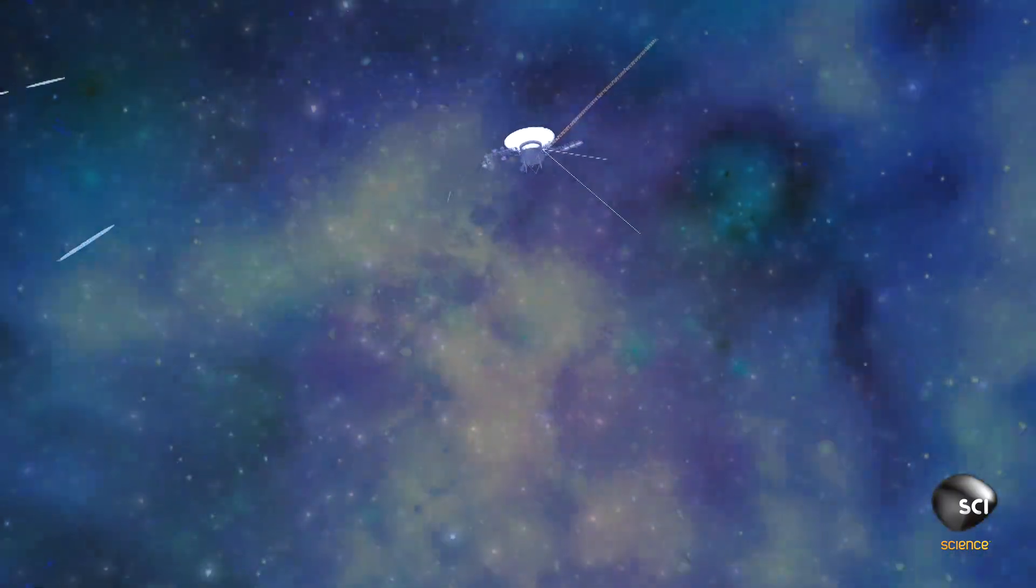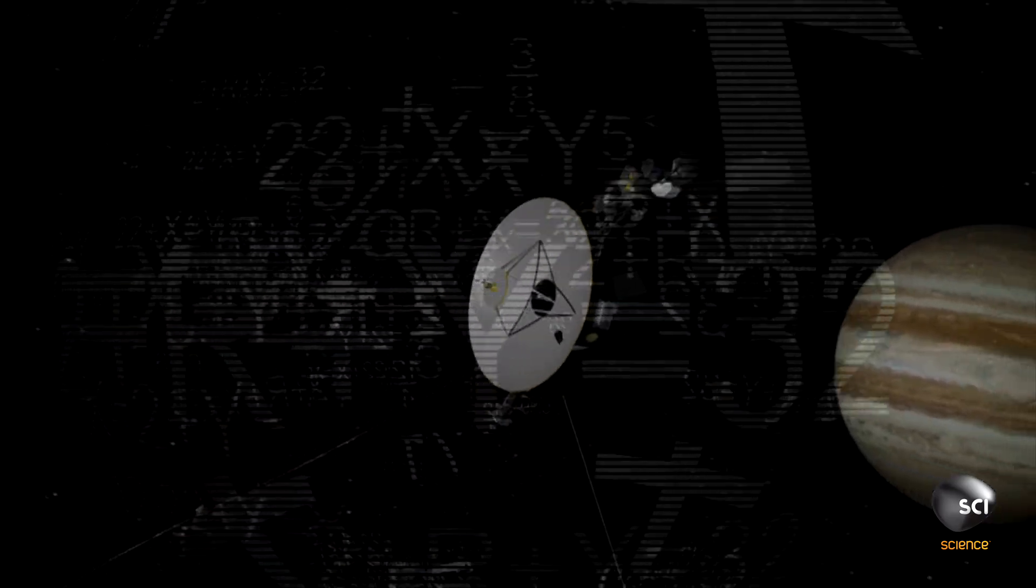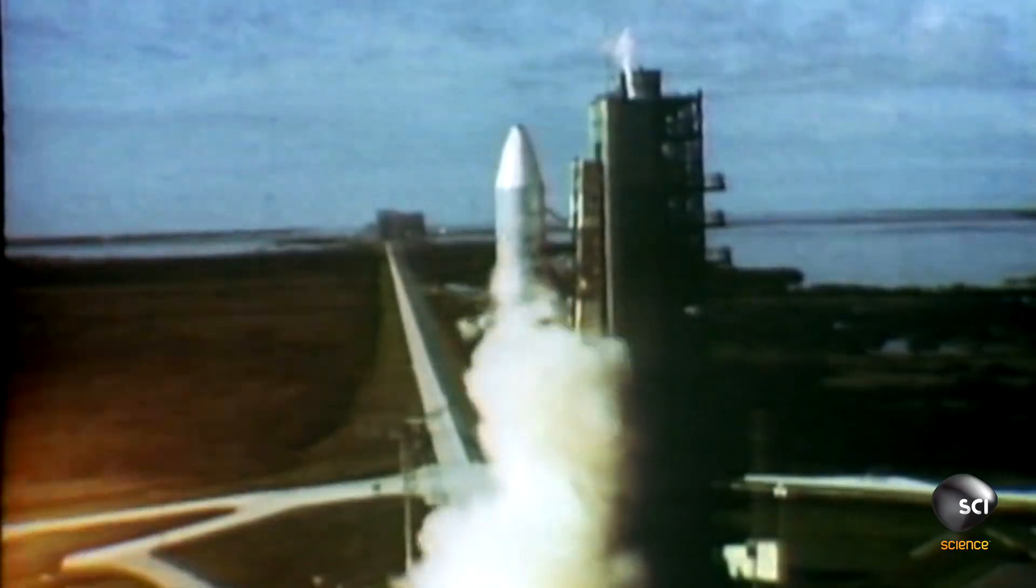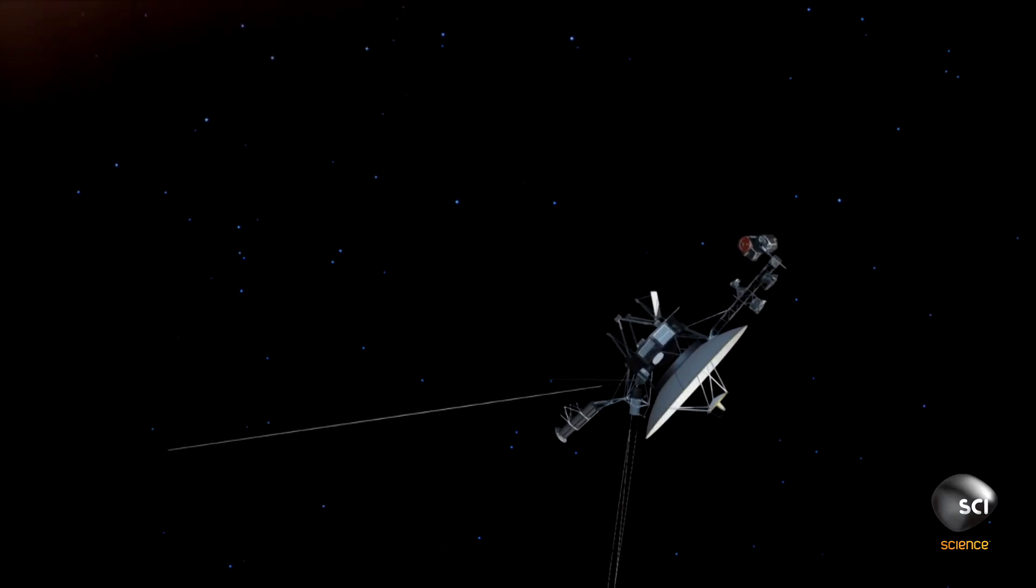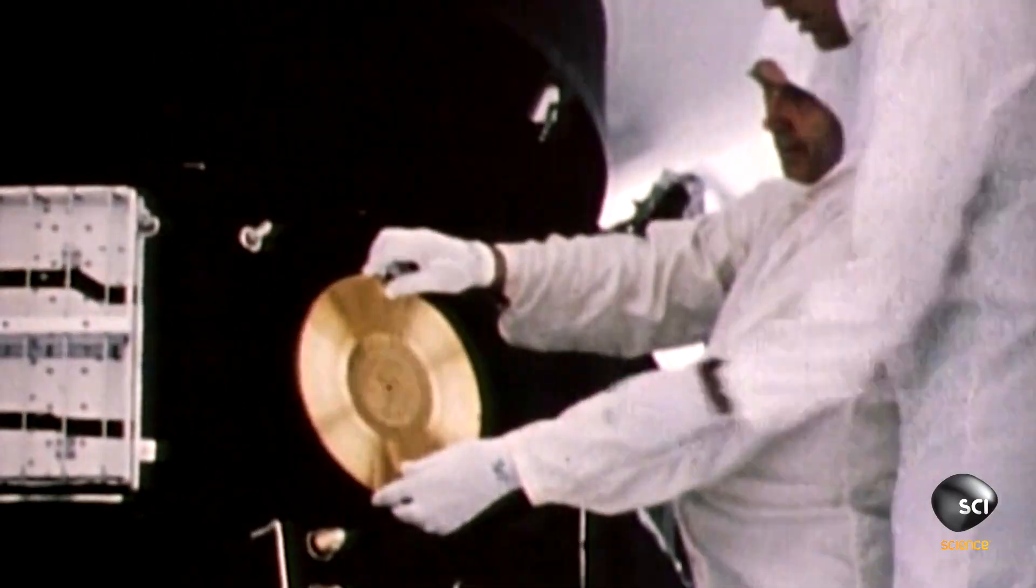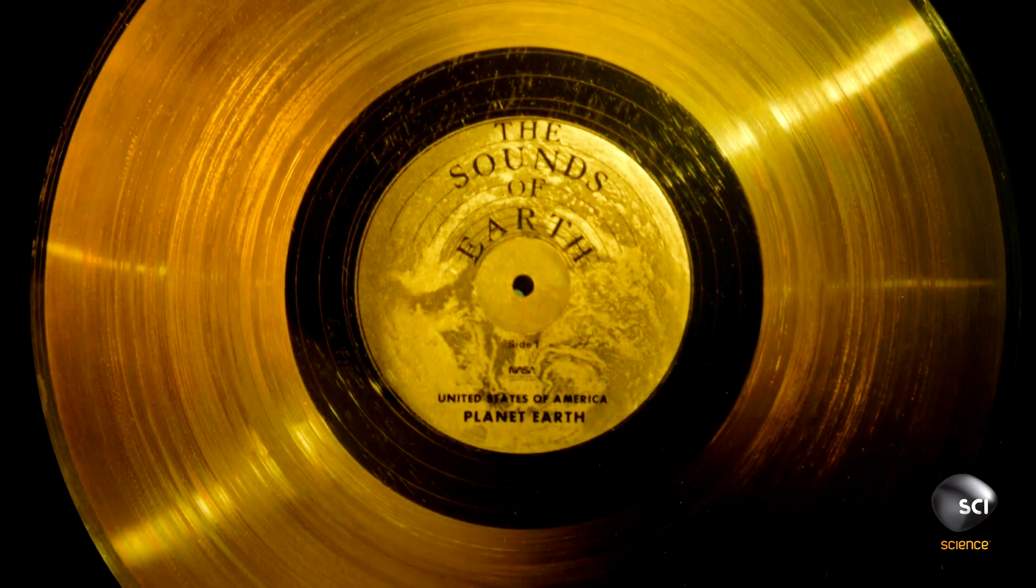The Voyager space probe carried messages aboard, designed to be interpreted by any alien lifeforms they might encounter. When Voyager was launched, it carried a record of images and sounds from Earth. Scientists hope that one day another civilization might pick up the messages and make contact with mankind.